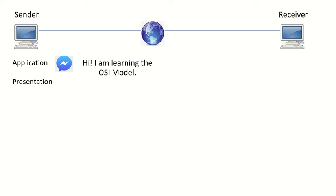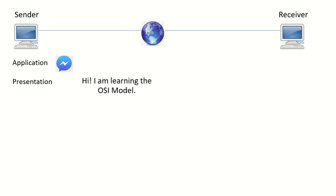...what happens to that actual data — the text I just typed — is that it gets forwarded to the Presentation Layer. The Presentation Layer converts the data received from the Application Layer into binary. Binary is a base-two number system made up of only two numbers: one and zero.